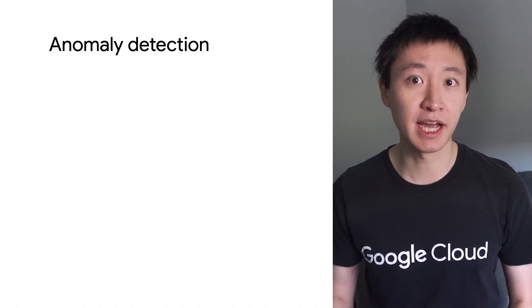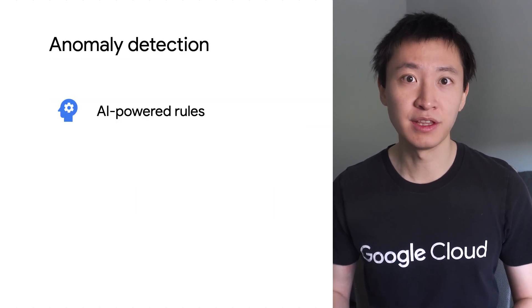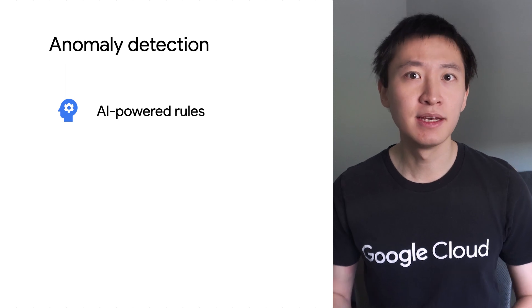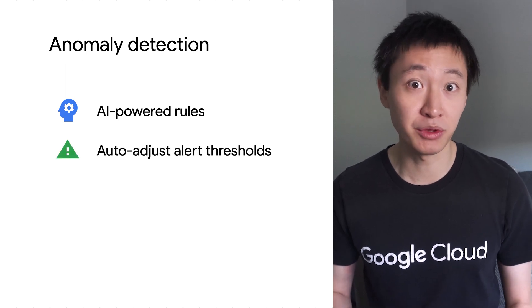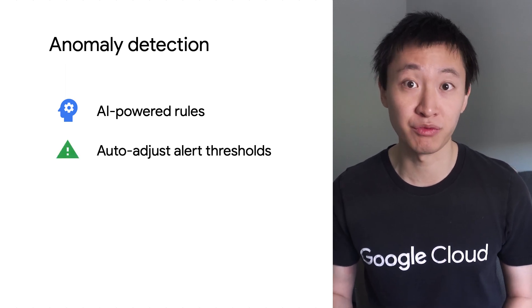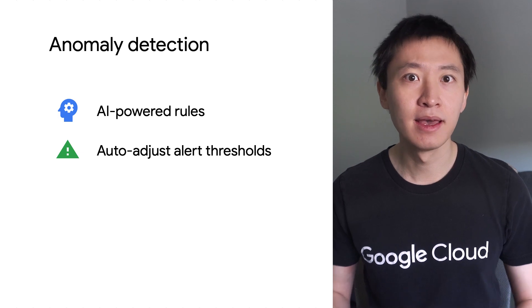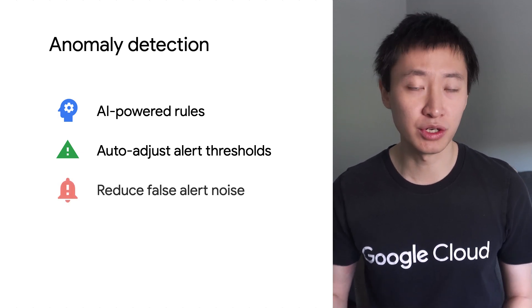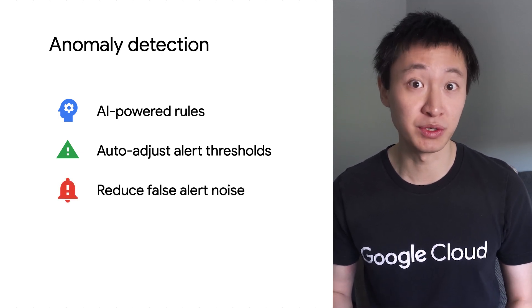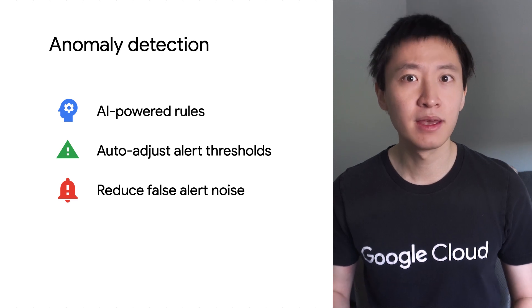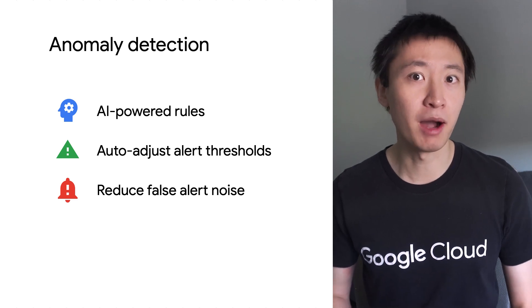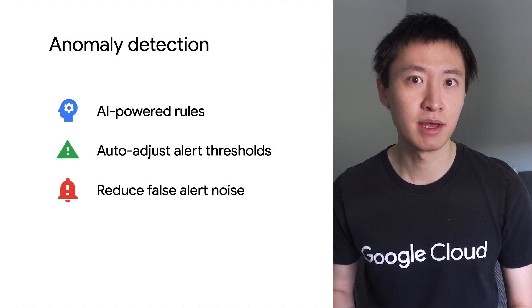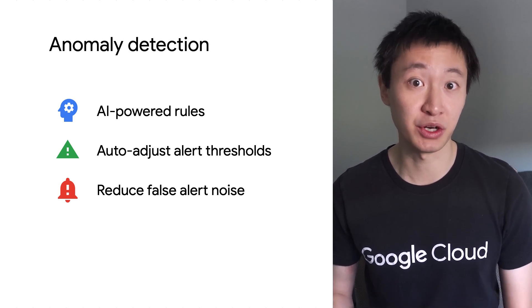Anomaly detection applies AI-powered rules that trigger alerts based on a set of predefined conditions. This eliminates the need for operators to manually adjust the monitoring thresholds on APIs. As API traffic changes by season, auto-adjustive thresholds reduce a lot of false alert noise. Operators can now focus on things that really matter to their business. Let's take a closer look at this feature.